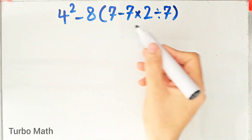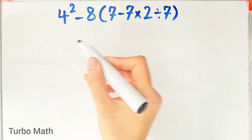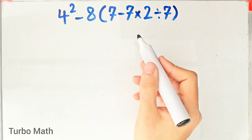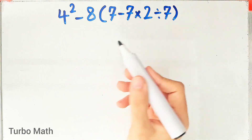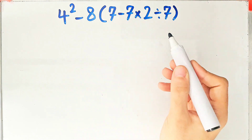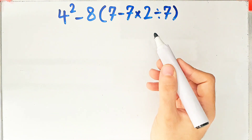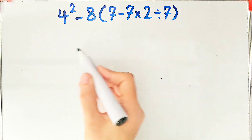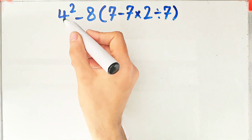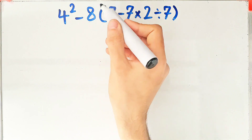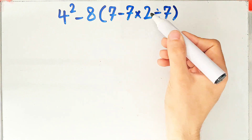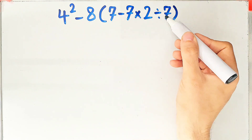Hi friends, welcome to Turbo Math channel. Many people when they see this question don't know which math operation to do first and they might get it wrong. Let's solve this question step by step together. The question is: four to the power of two, minus eight, then times open parenthesis seven minus seven times two divided by seven, close parenthesis. What is the answer?